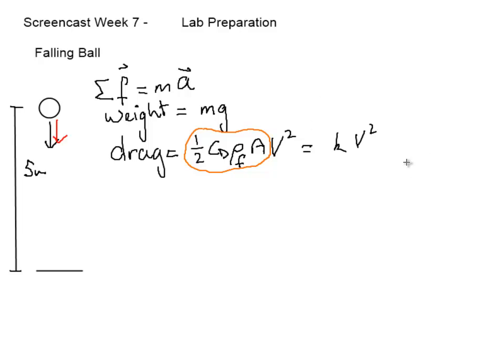Now, substituting these values back into our Newton's second law, we get that mass times acceleration is equal to mass times gravity minus, because drag works in the direction opposite to velocity, minus k v squared. Now, if we rearrange this slightly, we get that a equals g minus k on m v squared.